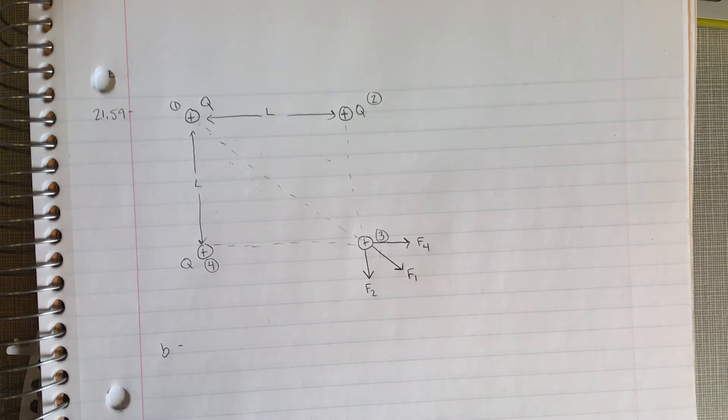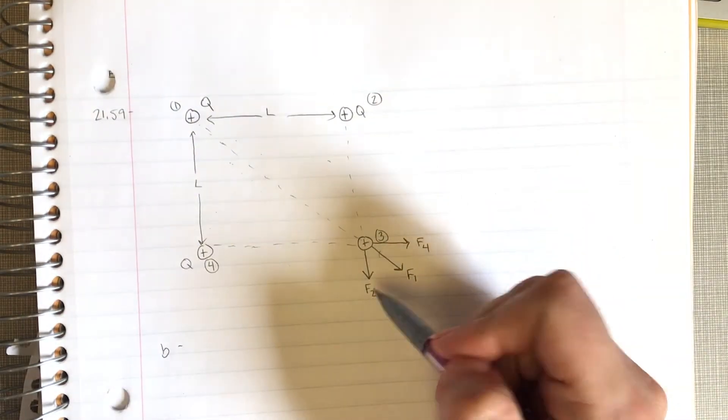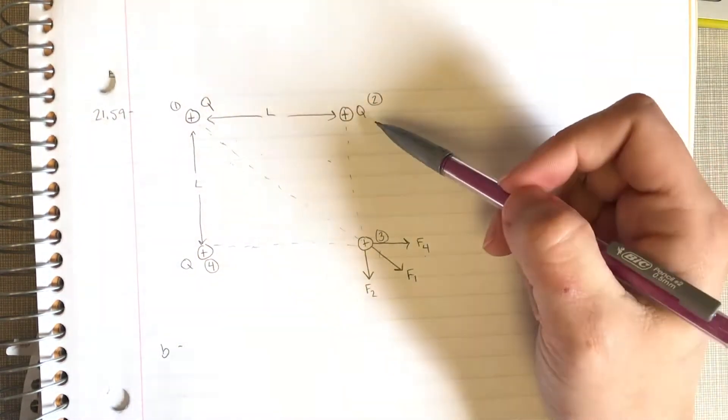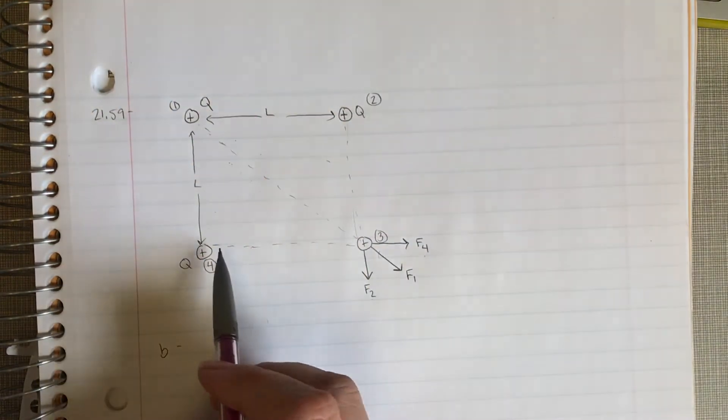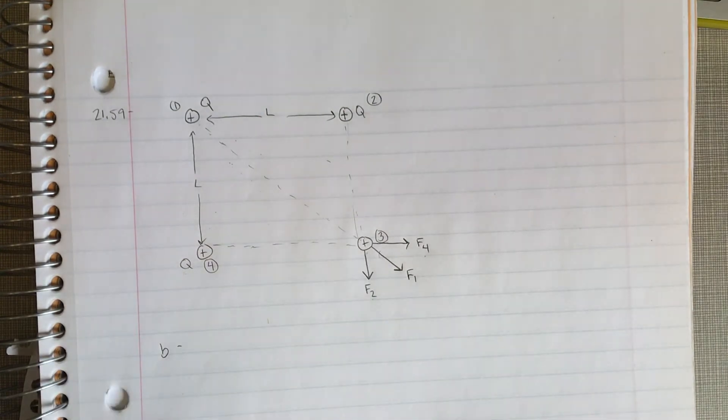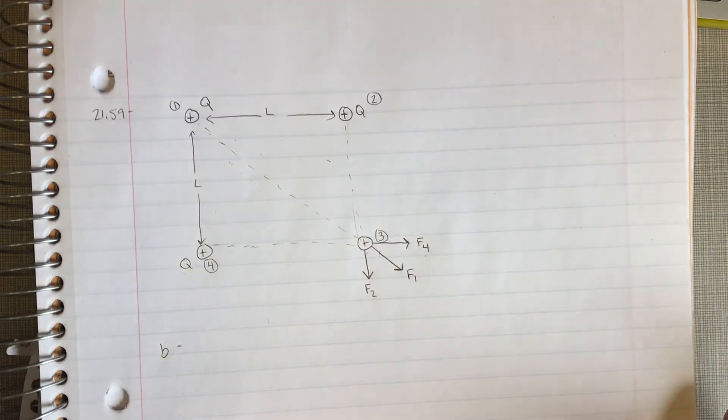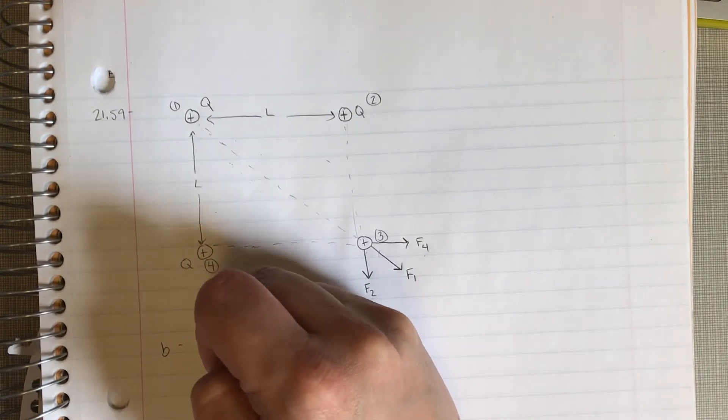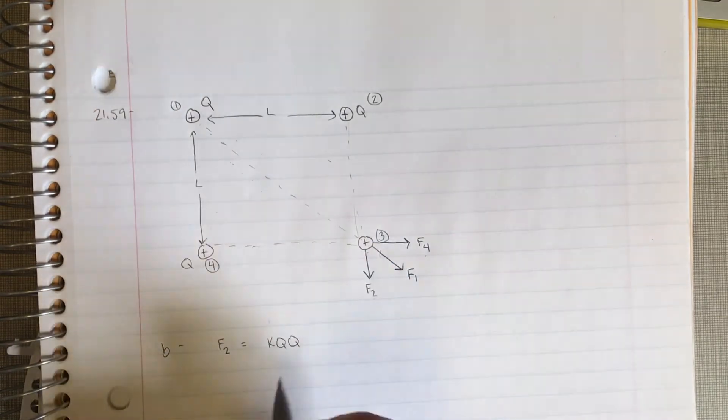Part B: find the magnitude and direction of the total force exerted on one charge by the other three charges. So if we look at this guy, f2 and f4, they're in different directions, yes, but the thing that makes that force has the same charge and they're the same distance away. So we can calculate the magnitude of these two and they're going to be the same, just in different directions.